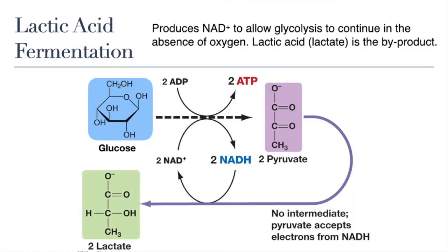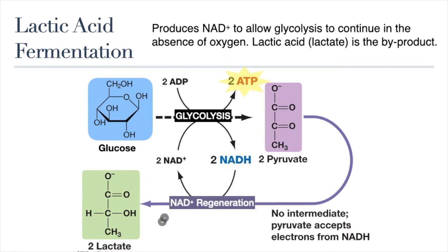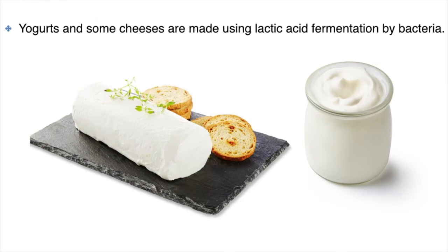Now let's explore lactic acid fermentation. Like alcoholic fermentation, this type also produces NAD+ by oxidizing NADH, but produces lactic acid — also called lactate — as a byproduct. There is no intermediate product, and no carbon dioxide is produced. Again, we start with glycolysis, which produces 2 ATP and 2 pyruvate and reduces NAD+ into NADH. In this reaction, the pyruvate accepts the electron from NADH to regenerate NAD+, which is then available once more for glycolysis. Many bacteria undergo lactic acid fermentation, and we use these bacteria to produce food products like yogurt and certain types of cheeses, as well as fermented foods like kimchi or sauerkraut.